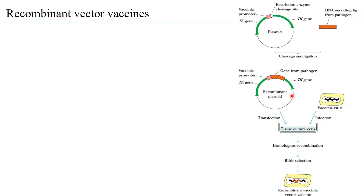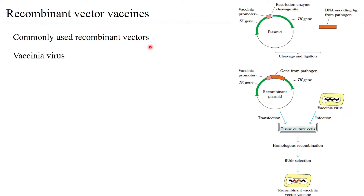The recombinant plasmid and the vaccinia virus are inoculated together. The plasmid gets into the vaccinia virus, and homologous recombination occurs. The vaccinia virus loses its own thymidine kinase gene but gains the gene from the pathogen. The result is a recombinant vaccinia vector carrying the DNA from the pathogen encoding the specific antigen — this is how a recombinant vector vaccine is created.